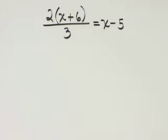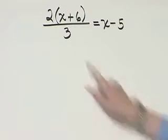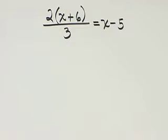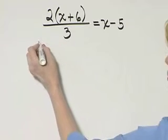How do we begin solving this equation? It has fractions. The LCD is 3. Let's begin by multiplying both sides by 3.